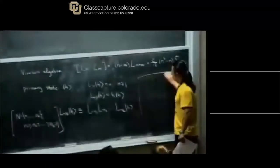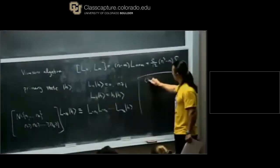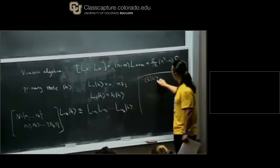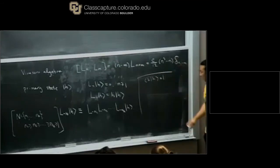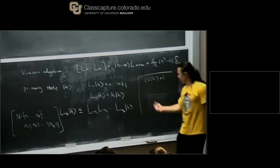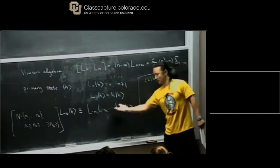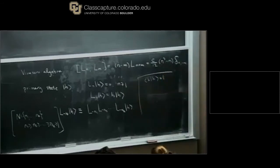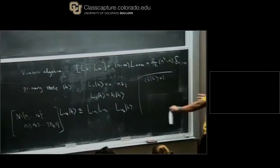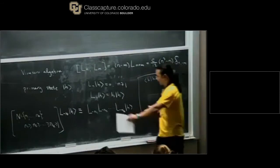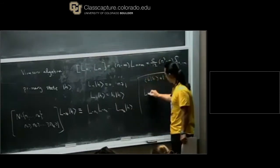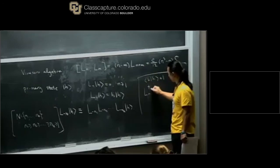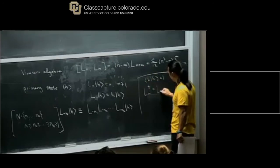The norm will be defined such that you can always normalize the primary to have unit norm. Then you take the Hermitian conjugate of the state and compute the inner product, remembering that the Hermitian conjugate of L_N is L_{-N}.